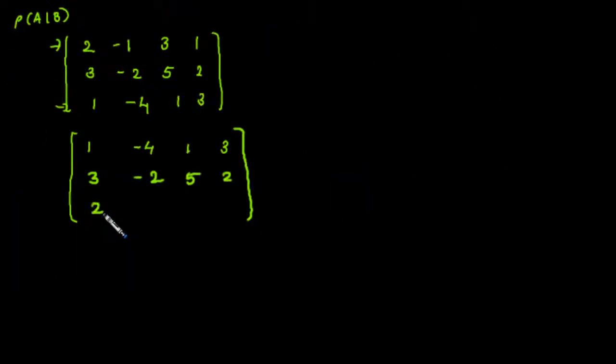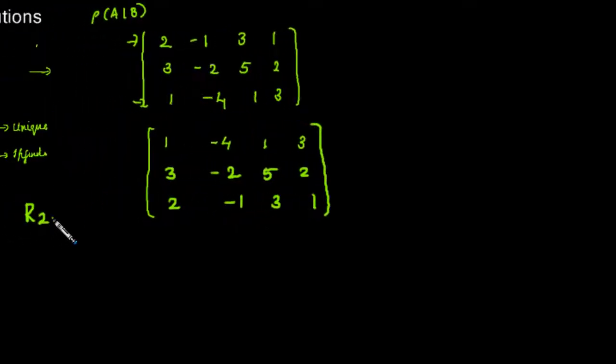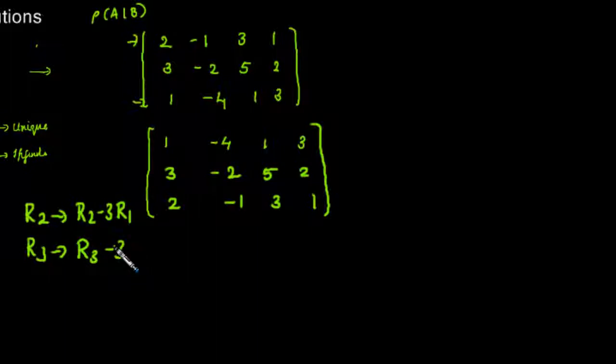The last row will be 2, -1, 3, 1. To convert it into row echelon form, R2 can be written as R2 minus 3R1 and R3 can be written as R3 minus 2R1, so that the elements below the first non-zero entry will be 0.